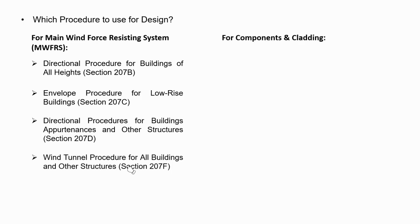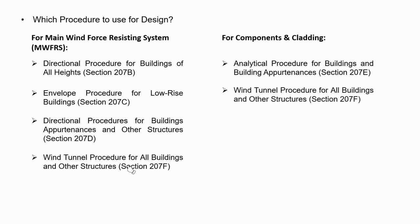For components and claddings, two methods are provided in the code. The analytical procedure for buildings and building appurtenances, under Section 207E. And wind tunnel procedure for all buildings and other structures, Section 207F. Since we will be focusing only on the analysis of MWFRS, we will use the directional procedure for buildings of all heights method.